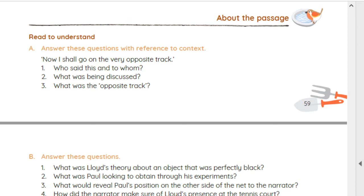Next question: What was Lloyd's theory about an object that was perfectly black? Answer: Lloyd's theory states that if objects are perfectly black or absolutely black, one could not see them in light as well.